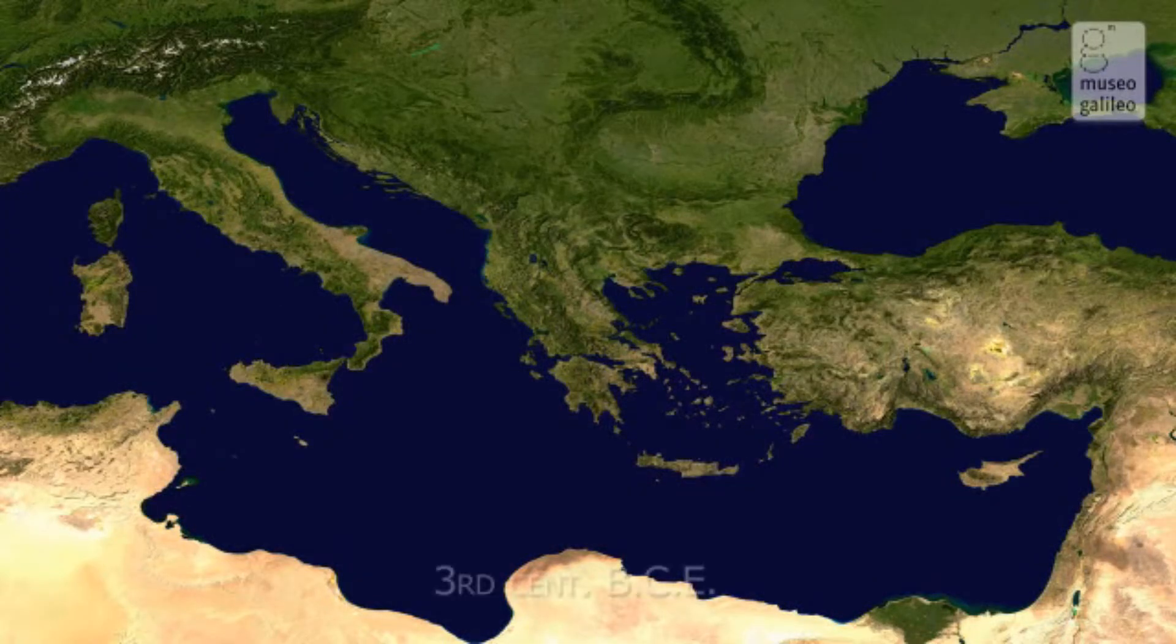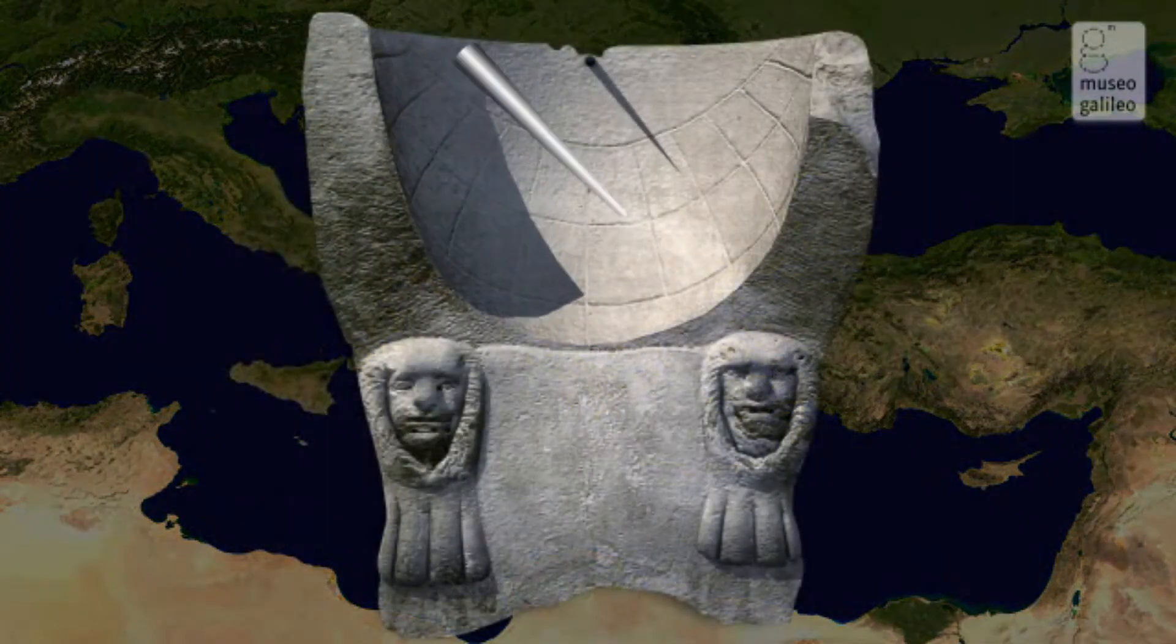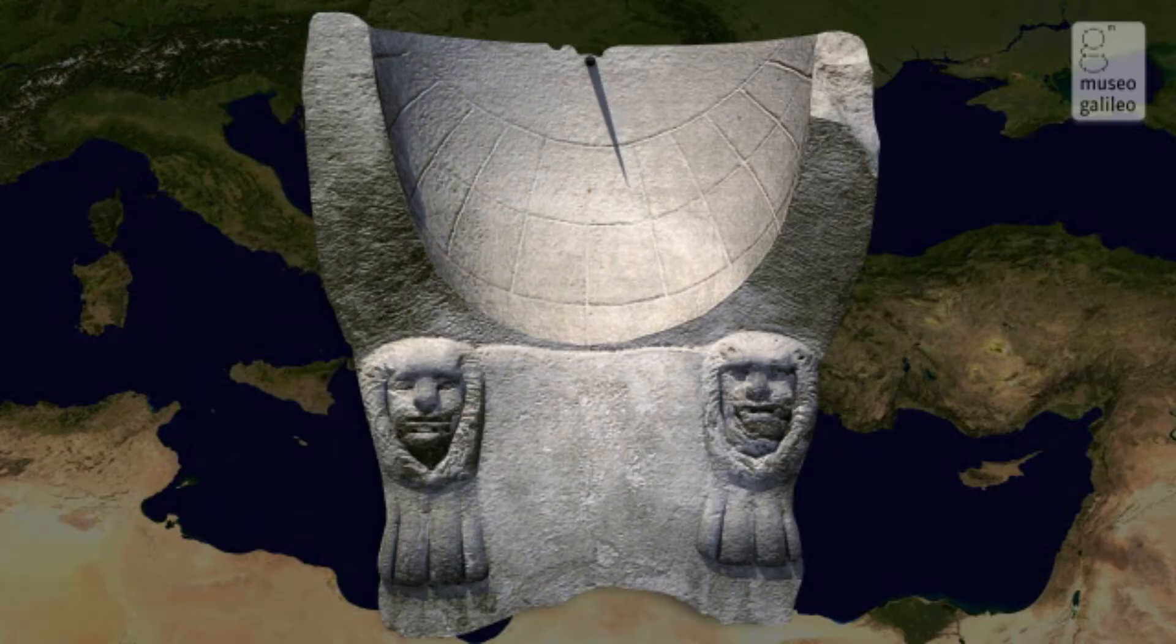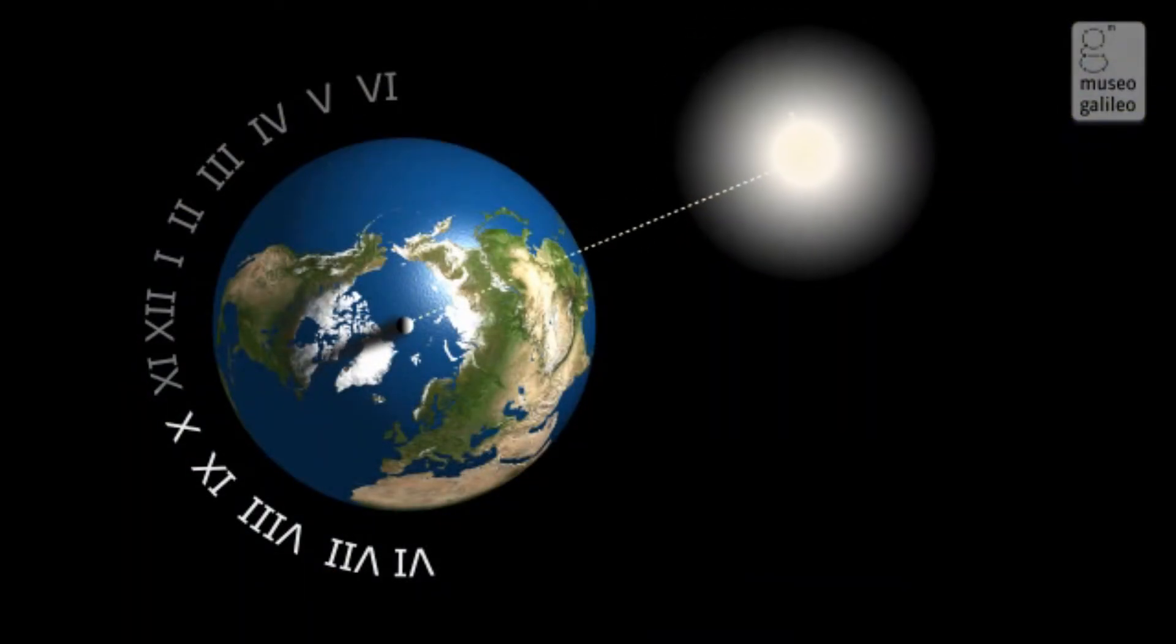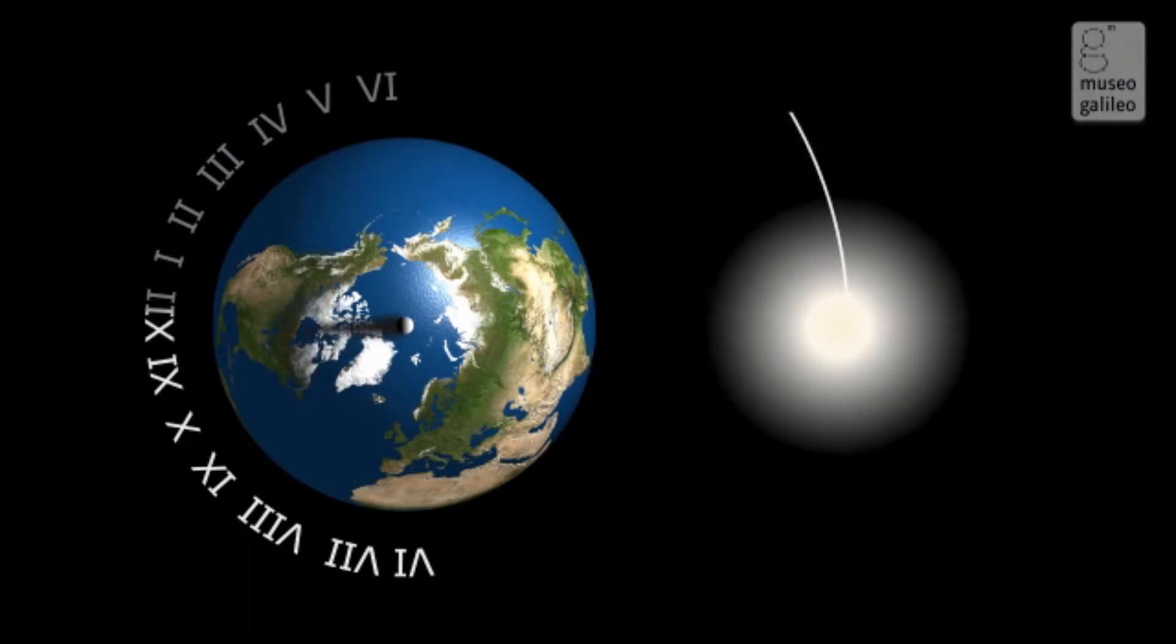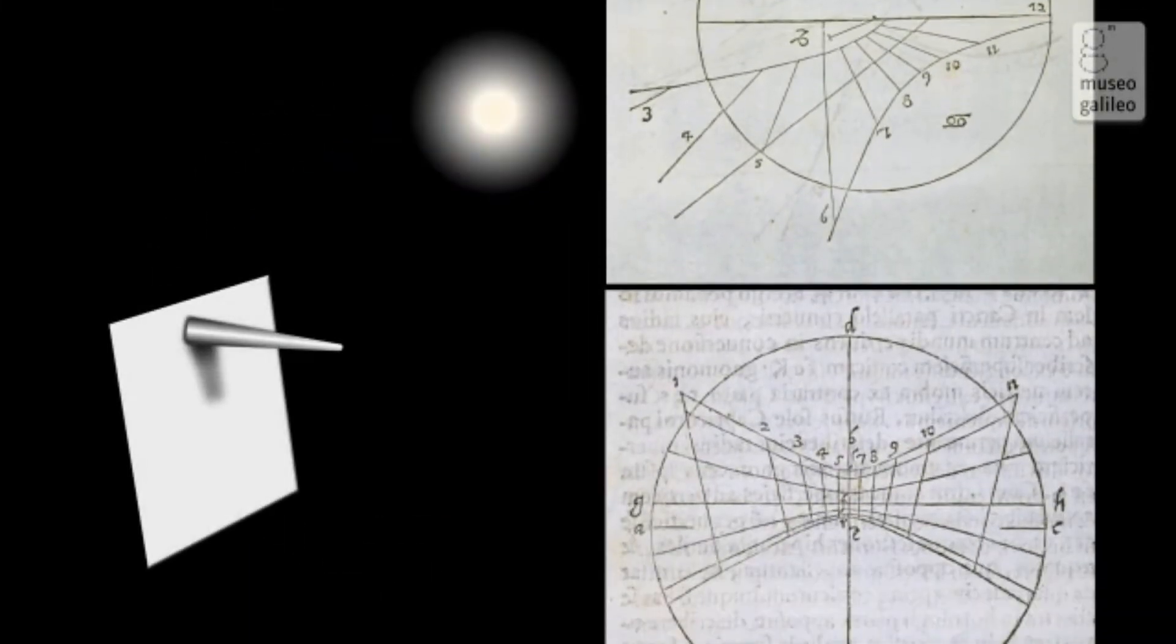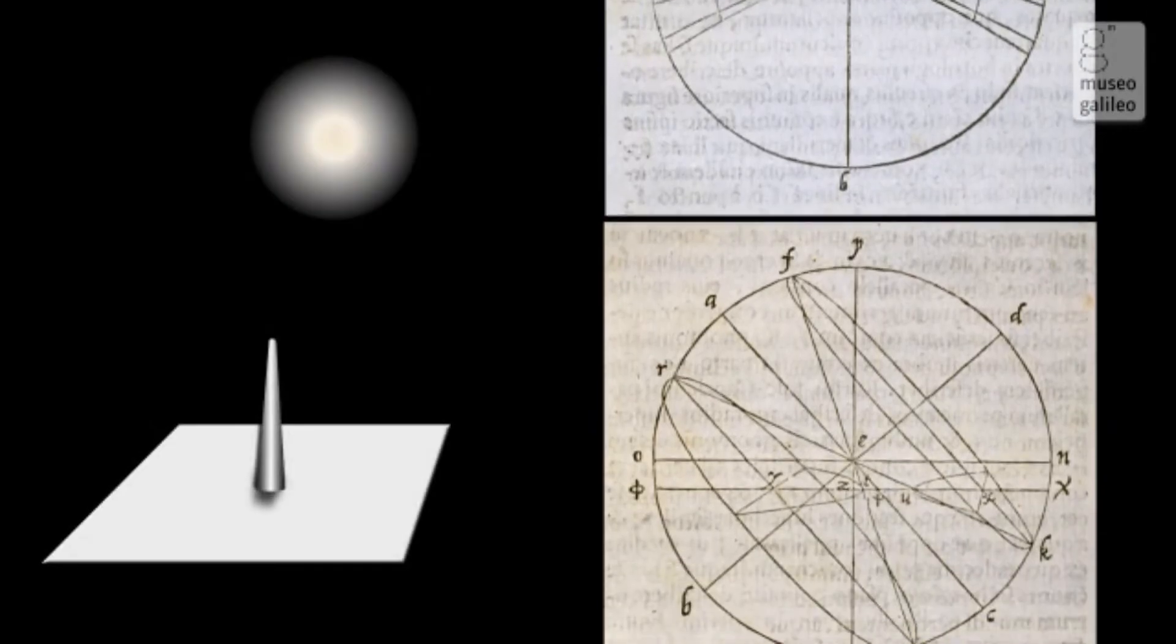Ever since the Hellenistic period, instruments were built based on the principle of a rod, known as a style, casting a shadow on a quadrant. Such instruments, called sundials, combine two notions. First, the sun as a timekeeper revolving around the immobile Earth in a uniform daily motion. Second, the geometrical analysis of the projection of the style's shadow on surfaces inclined at different angles.